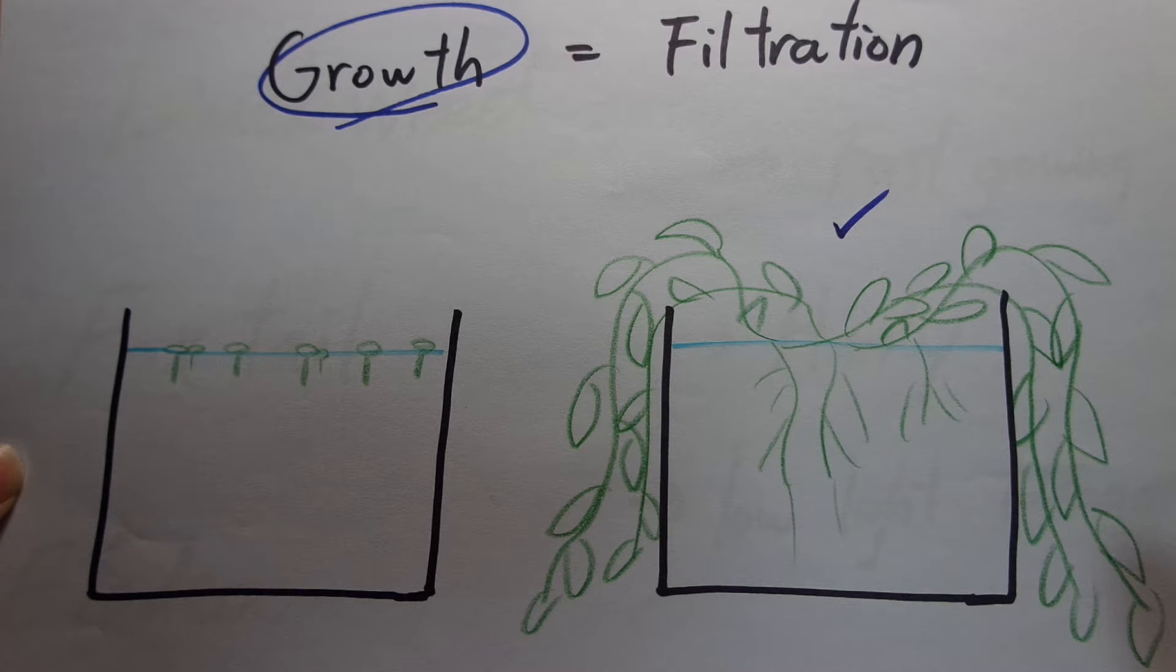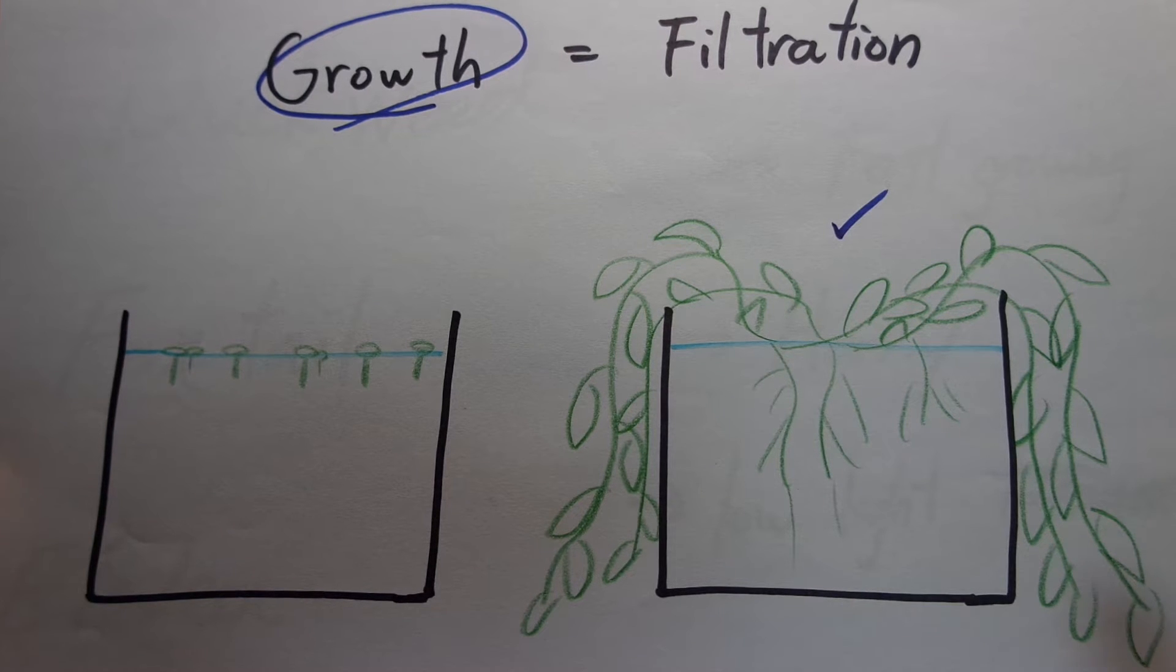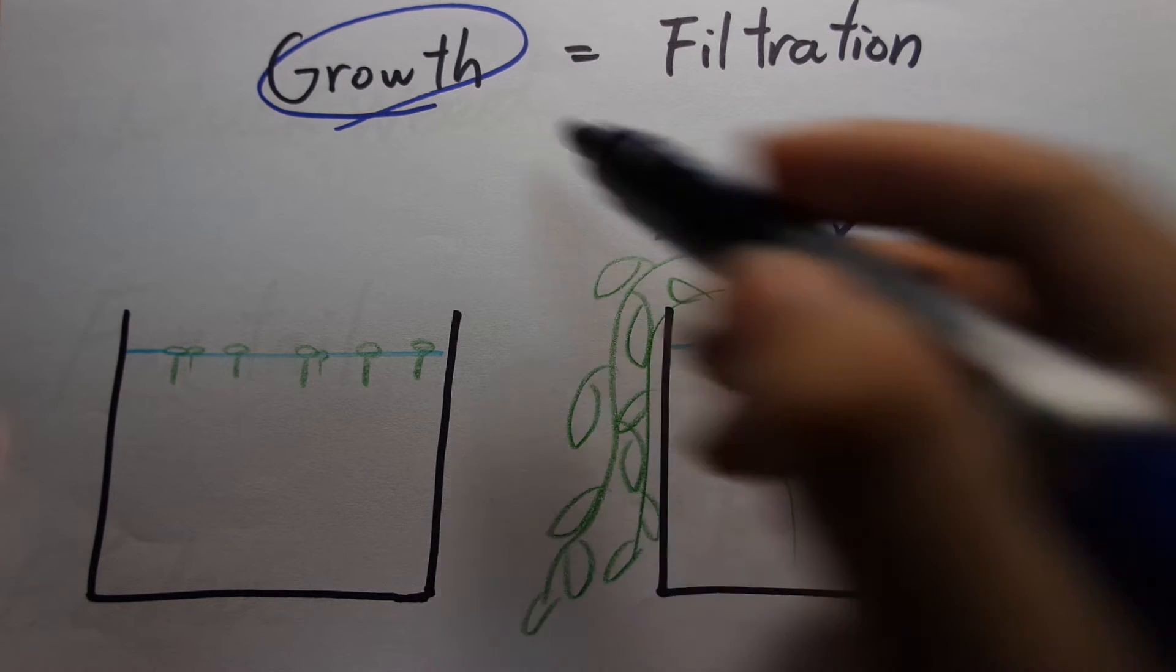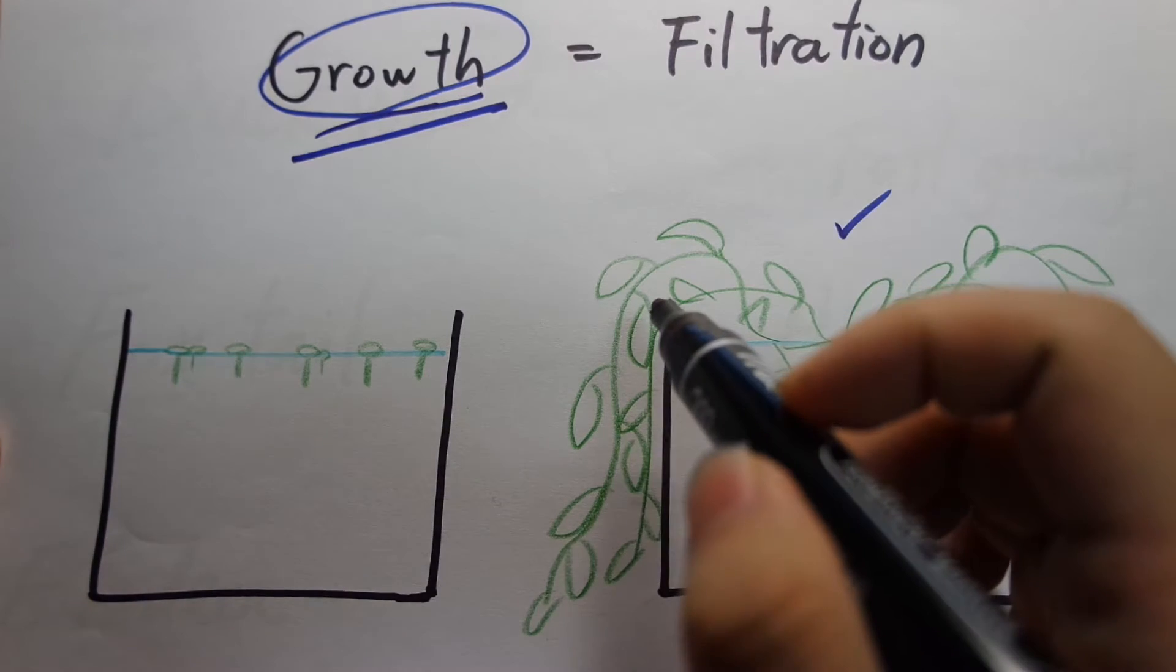But they would be completely wrong because pothos ivy is a very slow growing, low light plant. Duckweed is weed. It grows like crazy and it is actually considered a pest in most tanks because it grows really fast. It just completely takes over the surface of the tank. It's like it's a crazy plant that just grows really fast. And as I said, it's the growth that matters.